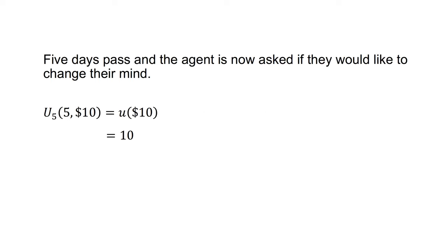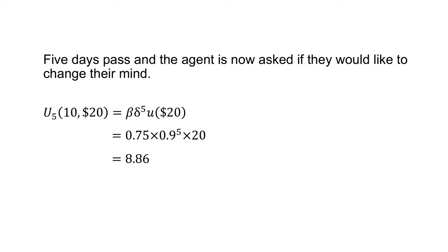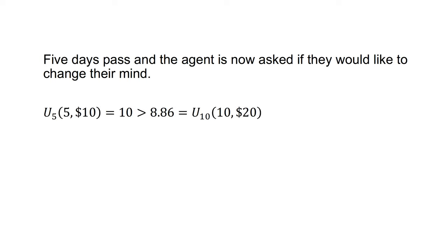Five days pass, so now we are at t equals 5. We ask the agent if they would like to change their mind. The discounted utility of the $10 today is u(5, 5, 10), which equals utility of $10, equals 10. The discounted utility of the $20 in 5 days, u(5, 10, 20), equals beta times delta to the 5 times u(20), which equals 0.75 times 0.9 to the 5 times 20, which equals 8.86. As u(5, 5, 10) equals 10, which is greater than 8.86, this present biased agent will prefer to receive $10 today. They have changed their preference between the two payments relative to their decision at t equals 0.